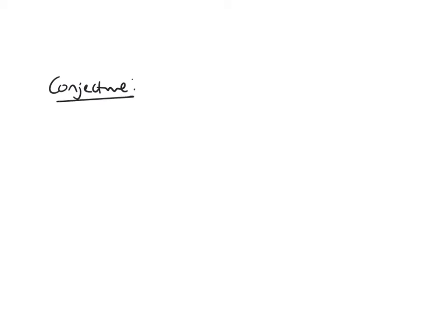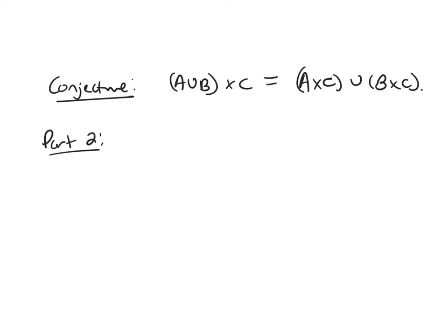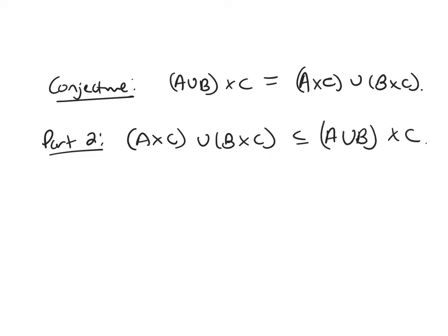Remember we were proving this conjecture in our last video. We were trying to prove that A union B cross C is equal to A cross C union B cross C. We proved the first part, but now we're going to prove that A cross C union B cross C is contained in A union B cross C.